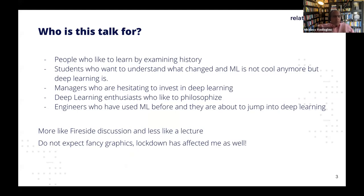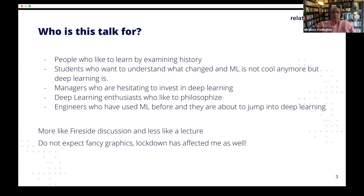Then coffee became popular — a brain stimulant — and all of a sudden there was an explosion of new ideas and social interaction between smart people. Things have changed now: I've seen most colleagues have new ideas over beer at happy hour. So who is this talk for? You'll find it interesting if you're the type of person who likes to learn by examining history, understanding how we got here. It's particularly good for students who want to understand what changed and why machine learning isn't cool anymore but deep learning is. Also good for managers hesitant to invest in deep learning.